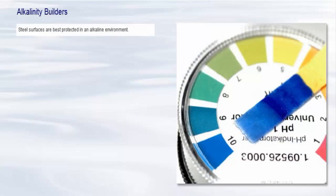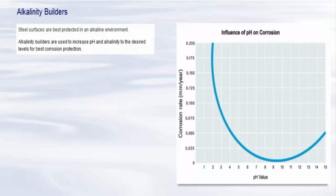Steel surfaces are best protected in an alkaline environment. Alkalinity builders are used to increase pH and alkalinity to the desired levels for best corrosion protection. Alkalinity builders also help with scale control in alkali phosphate treatment programs. The alkalinity of the water also acts as a buffer, a property that will absorb pH changes if acid components are introduced and maintain an alkaline pH.